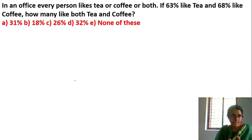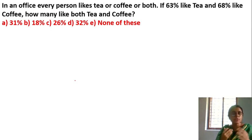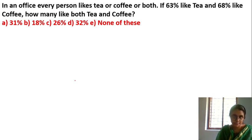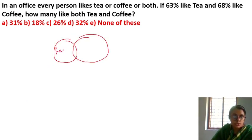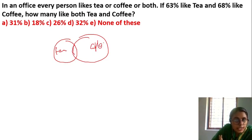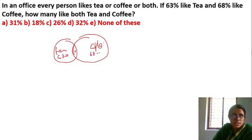You can approach this in two steps — just simple, 10 seconds, formula-based. We draw a Venn diagram: tea and coffee overlap. Let the intersection be x. So tea only is 63 minus x, coffee only is 68 minus x. Total people — since we are working in percentages, we assume 100. We use the formula: A plus B minus A intersection B equals A union B.